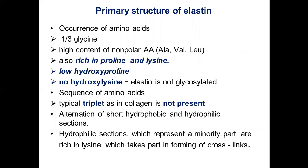Elastin is primarily composed of non-polar amino acids such as glycine, valine, alanine, lysine, and isoleucine. It is also rich in proline and alanine, with low hydroxyproline and low hydroxylysine in its primary structure, because elastin is not glycosylated. The typical triplet sequence found in collagen's primary structure is not present in elastin.